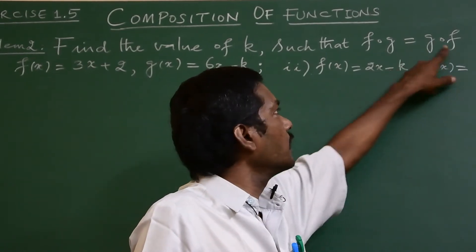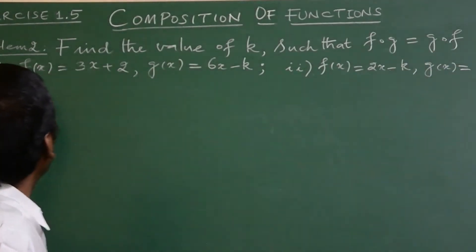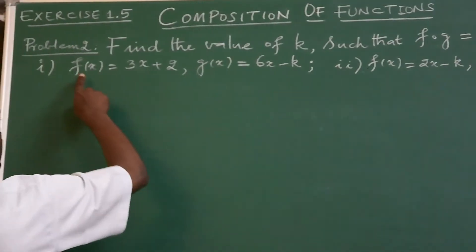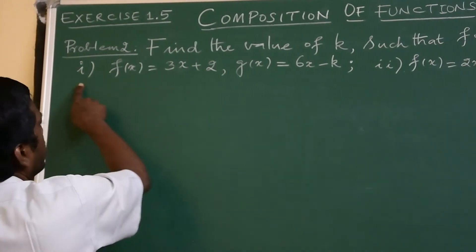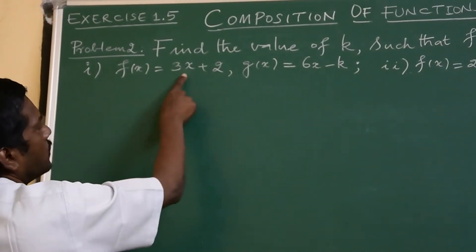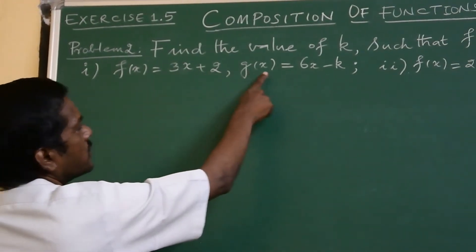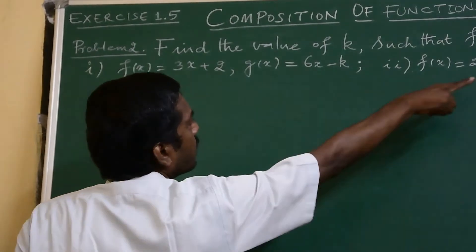This is equal to 2 problems. For the first problem, f of x is equal to 3x plus 2, and g of x is equal to 6x minus k.